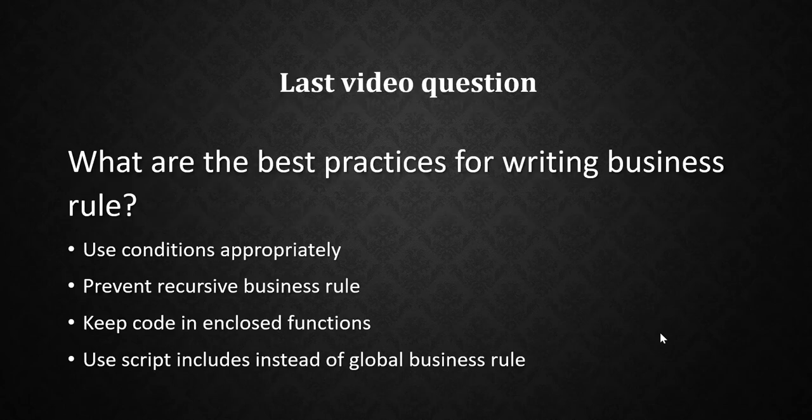In the last video I asked: what are the best practices for writing a business rule? The best practices are: use conditions appropriately, prevent recursive business rules — a recursive business rule calls itself again and again which affects performance — keep code enclosed in functions, and use script includes instead of global business rules.